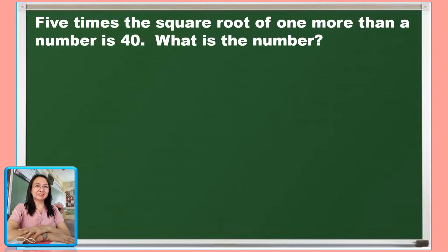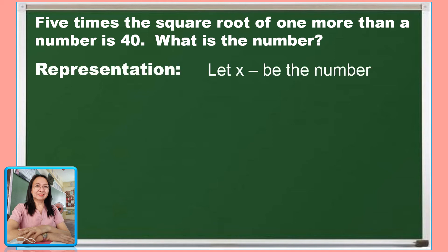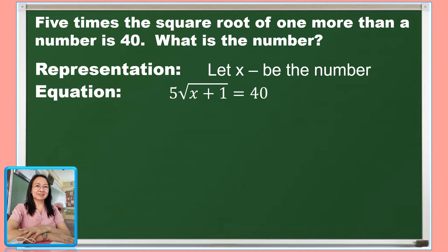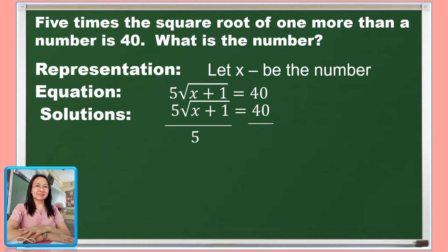Let us have our third problem. 5 times the square root of 1 more than a number is 40. What is the number? Let x be the number. From the statement, we write the equation: 5 times the square root of x plus 1 equals 40. To solve, divide both sides by 5, canceling the 5 to give 1, and 40 divided by 5 equals 8. So the square root of x plus 1 equals 8.